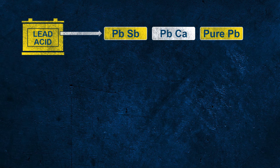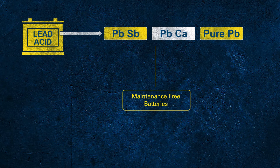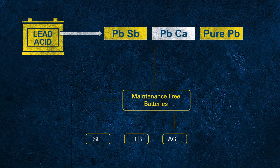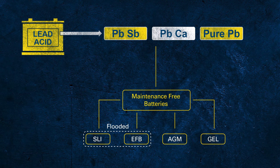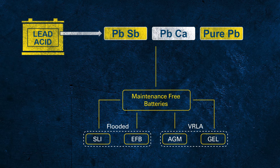Let's focus on the different battery types under the umbrella of maintenance-free batteries: SLI, EFB, AGM, and GEL. These different battery technologies can be divided into two subgroups — flooded batteries with fluid electrolyte, and so-called VRLA batteries with fixed electrolyte and valves inside. VRLA stands for valve regulated lead acid.